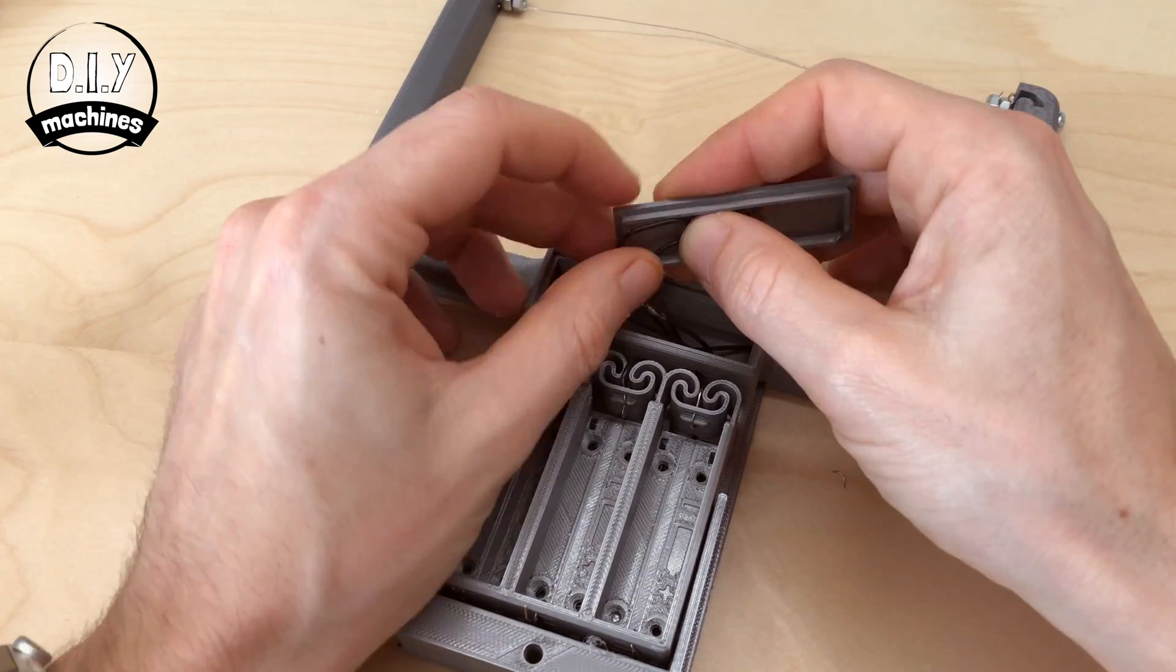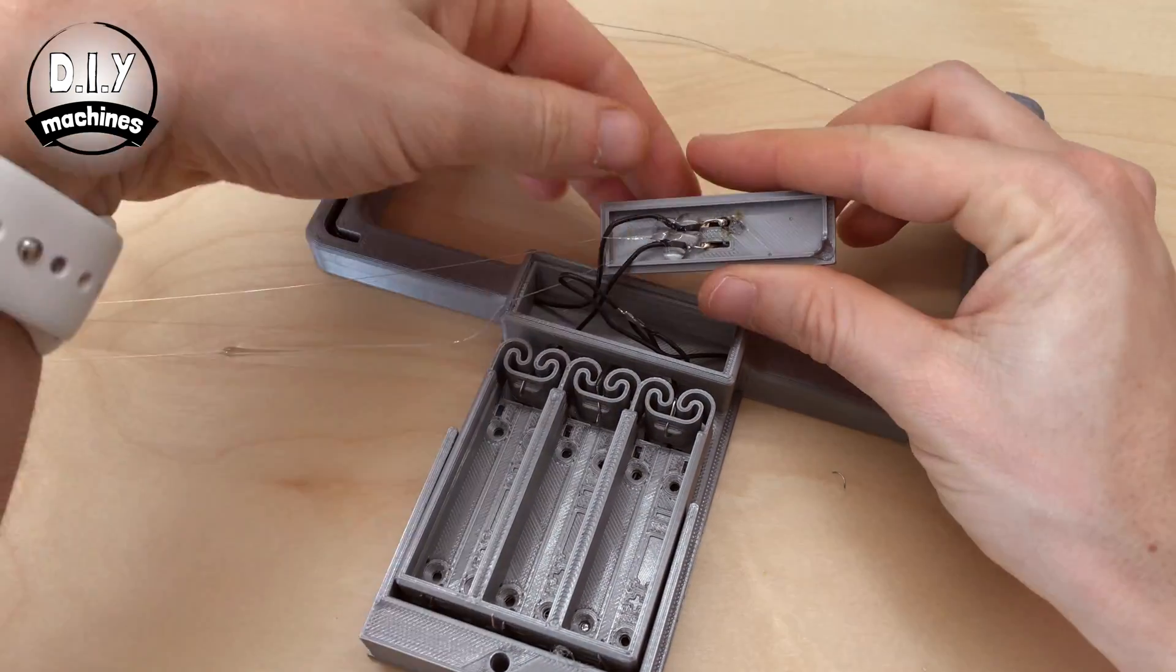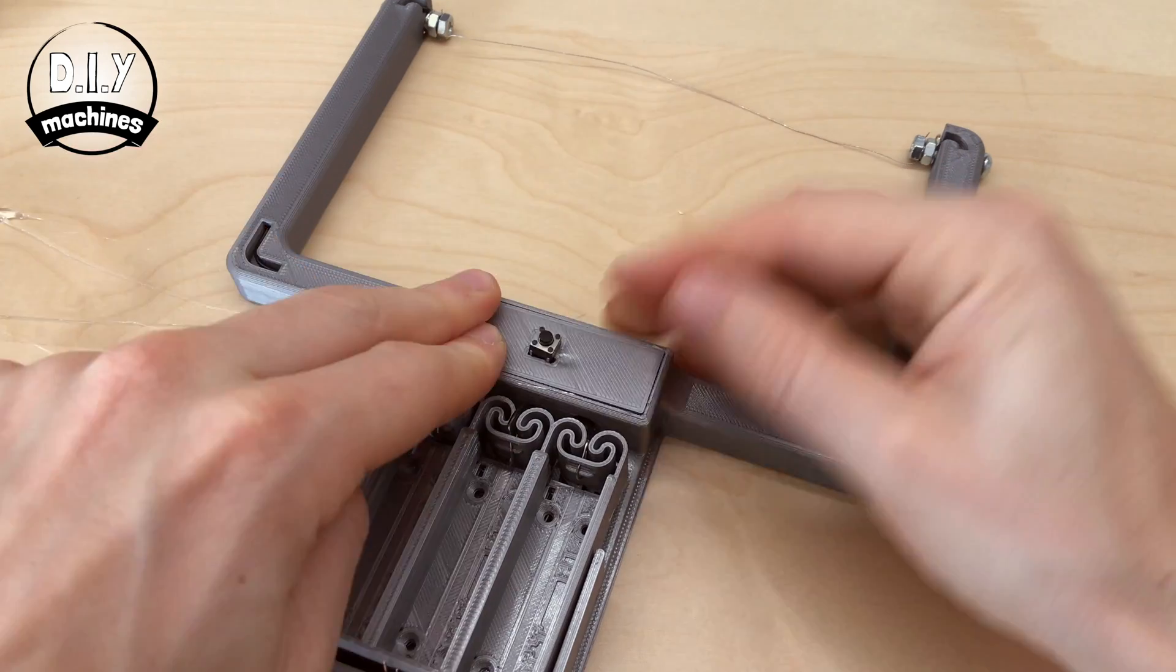Tuck all of the wires in and secure them in place with some hot melt glue. This will also help to prevent any short circuits from occurring.